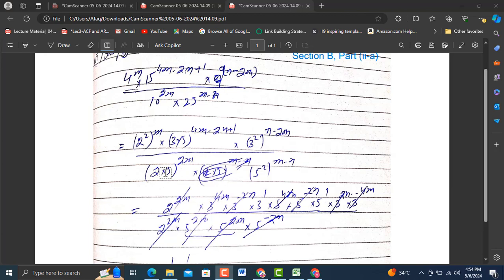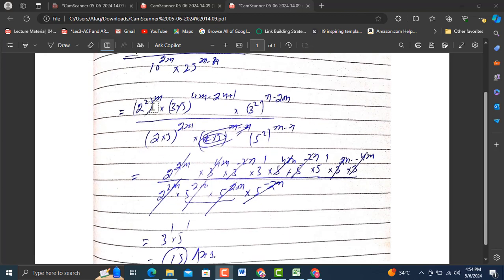Now I am going to open this one: 2 raised to power 2m into 3 raised power 4m into 3 raised power minus 2n into 3 raised power 1. Now this base comes here: 5 raised power 4m into 5 raised power minus 2n into 5 raised power 1. Now we are going to decompose the third element of the numerator.